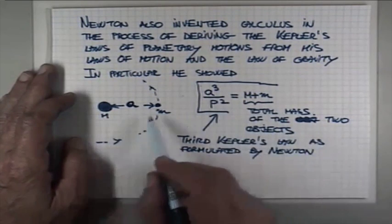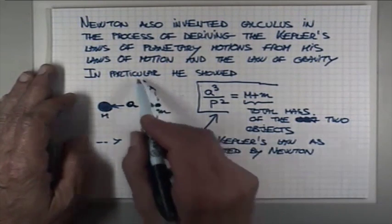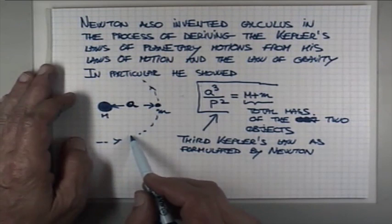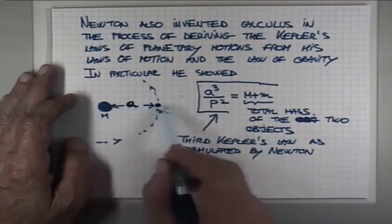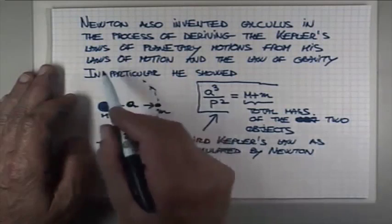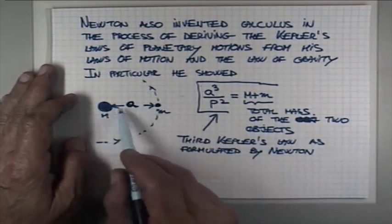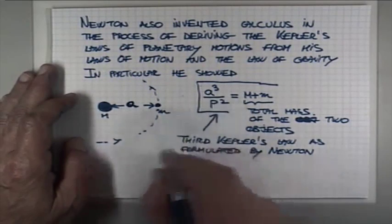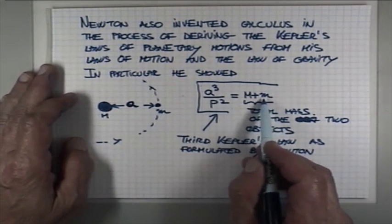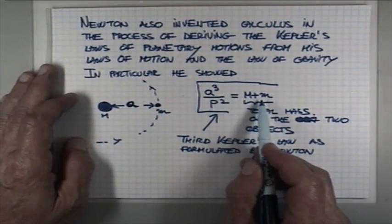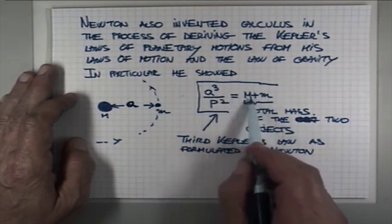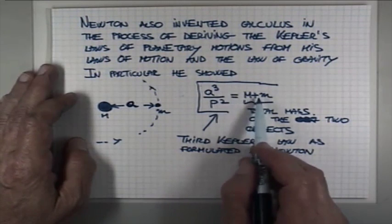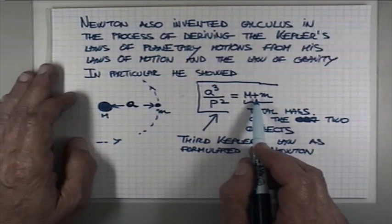You can do the same thing in the case of a planet revolving around the Sun. Again, by measuring the distance of the planet from the Sun, its orbital period, you can determine the total mass of the Sun and the planet. But again, all the planets, including the largest one Jupiter, is much, much smaller than the Sun. So basically, this here amounts to the mass of the Sun.